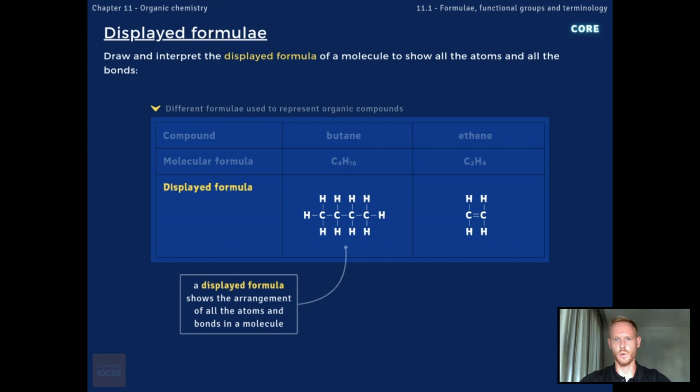A displayed formula shows all the atoms and all the bonds present in an organic compound, giving a clear picture of how the atoms are arranged and connected. For example, the molecular formula of butane, C4H10, shows us the type and number of atoms in the molecule, but tells us nothing about their arrangement or the bonds holding them together. The displayed formula reveals this information.